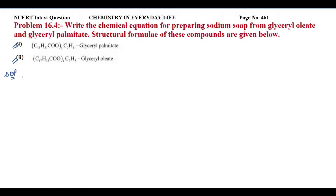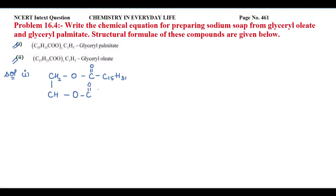The structural formula of glyceryl palmitate is: CH₂–O–C(=O)–C₁₅H₃₁, CH–O–C(=O)–C₁₅H₃₁, and CH₂–O–C(=O)–C₁₅H₃₁. This is the structural formula of glyceryl palmitate.